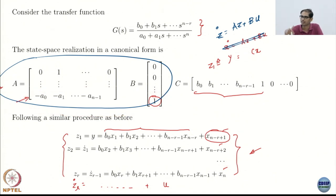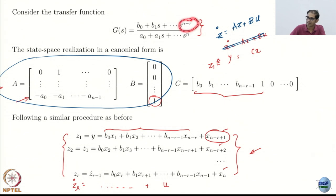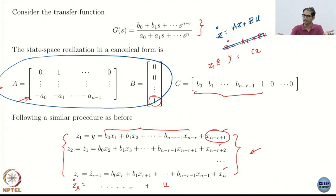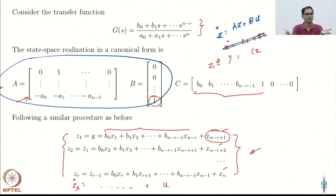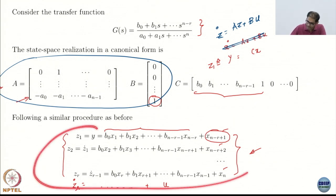When I take Zr dot, the derivative of this expression, these terms give me indices r plus 1, r plus 2, up to n. But x_n dot will bring in the control as it should, because it is a relative degree r system. By the fact that you go only to n minus r in the numerator, it is a relative degree r system for the linear case.